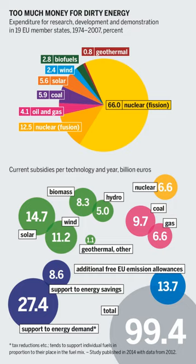A World Resources Institute study finds that energy subsidies often go to capital-intensive projects at the expense of smaller or distributed alternatives. Types of energy subsidies include direct financial transfers such as grants to producers, grants to consumers, and low interest or preferential loans to producers. Preferential tax treatments include rebates or exemptions on royalties, duties, producer levies and tariffs, tax credits, and accelerated depreciation allowances on energy supply equipment.